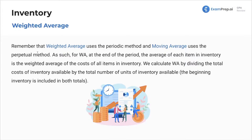Now, weighted average — remember that weighted average uses the periodic method and moving average uses the perpetual method. That's just a rule, but they're basically the same thing. For weighted average, at the end of the period, the average cost of each item in inventory is the weighted average of the costs of all items. We calculate it by dividing the total cost of inventory available by the total number of units available.